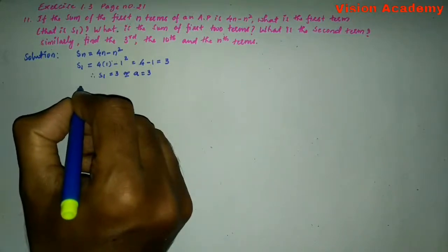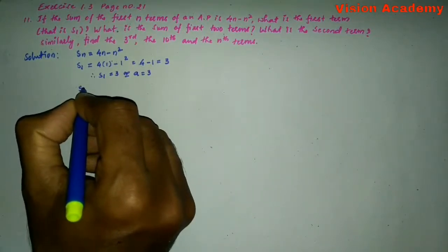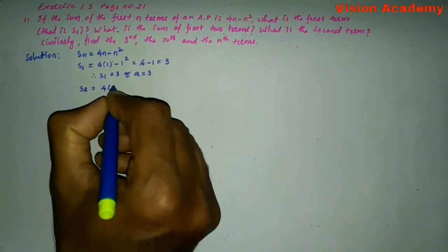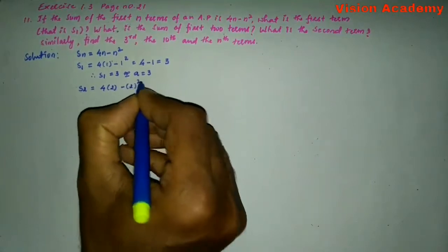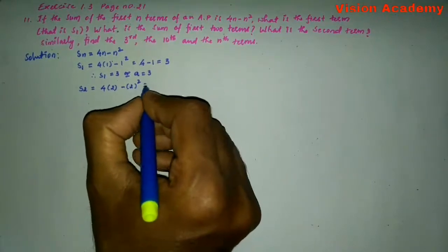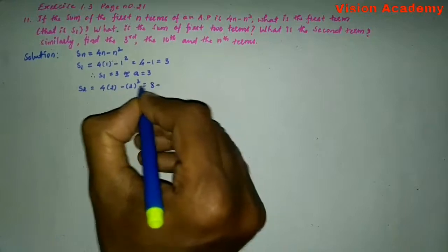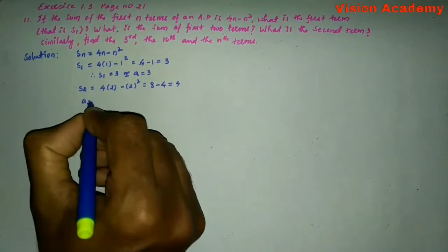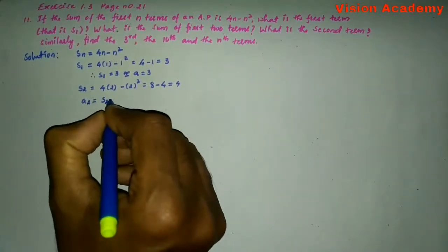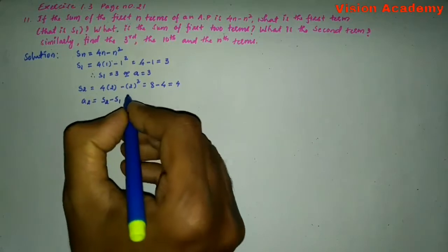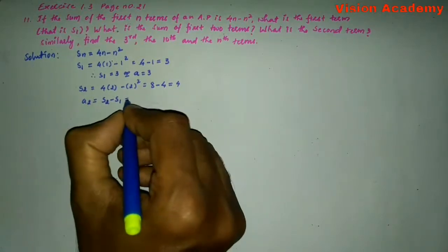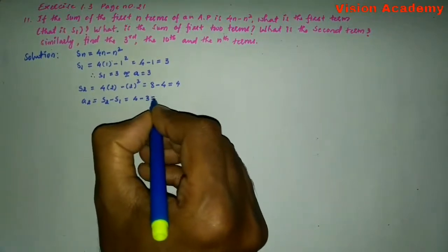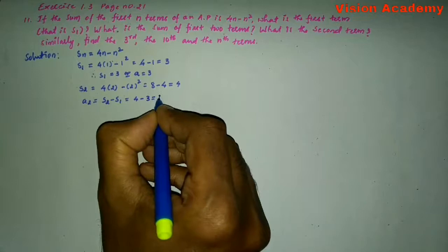Now let us find the second term. S2 is equal to 4 into 2 minus 2 whole square, which is equal to 8 minus 4, which gives me 4. The second term A2 is equal to S2 minus S1, which gives me the second term. S2 is 4 minus S1 is 3, so the second term A2 is 1.